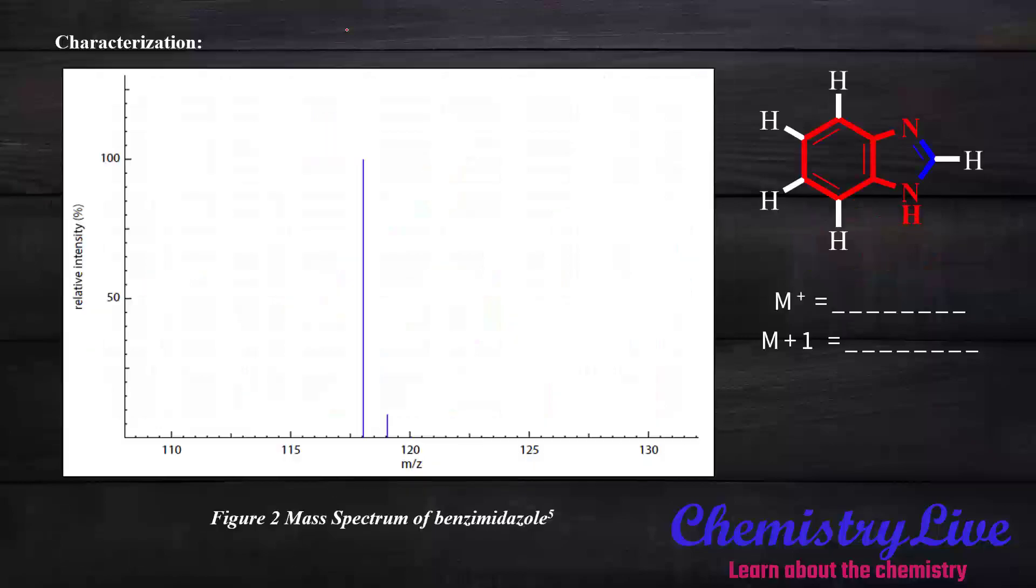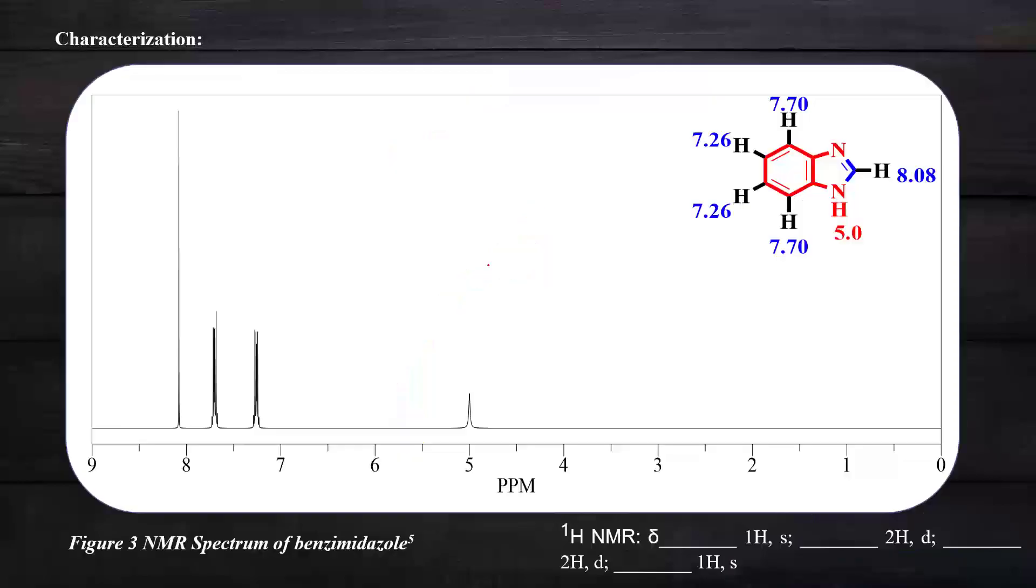Next, we switch to the mass spectrum. The molecular weight of benzimidazole is about 118. Here we get the peak at 118, which is the M⁺ peak, and another peak at 119, which is M+1 peak. From that we can conclude that our compound is prepared from the mass spectrum.